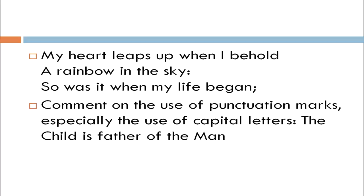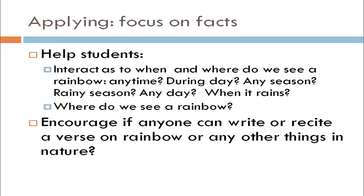Also encourage them to comment on the use of punctuation marks, especially the use of capital letters. The child is father of the man — why is the capital letter used for 'Father,' 'Man,' and 'Child'? We should also help students interact as to when and where we see a rainbow — during the day, any season, the rainy season, or when it rains? We can also encourage them if anyone can write or recite a verse on rainbow or any other things in nature.